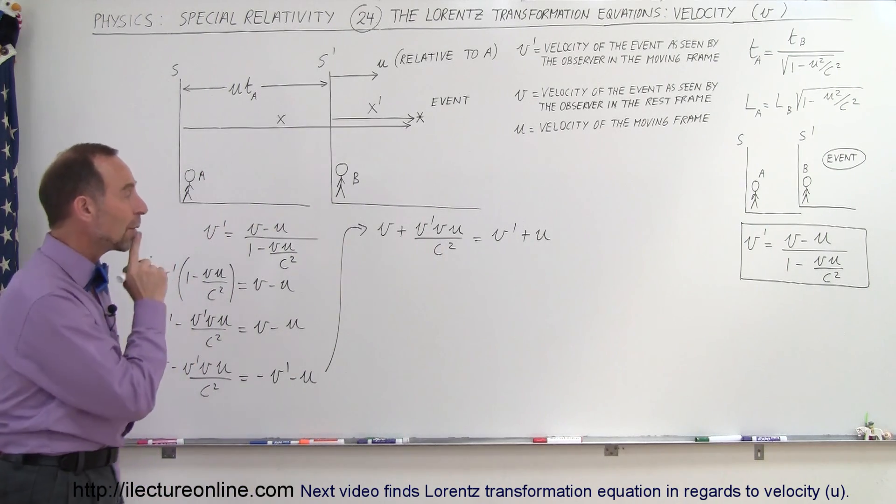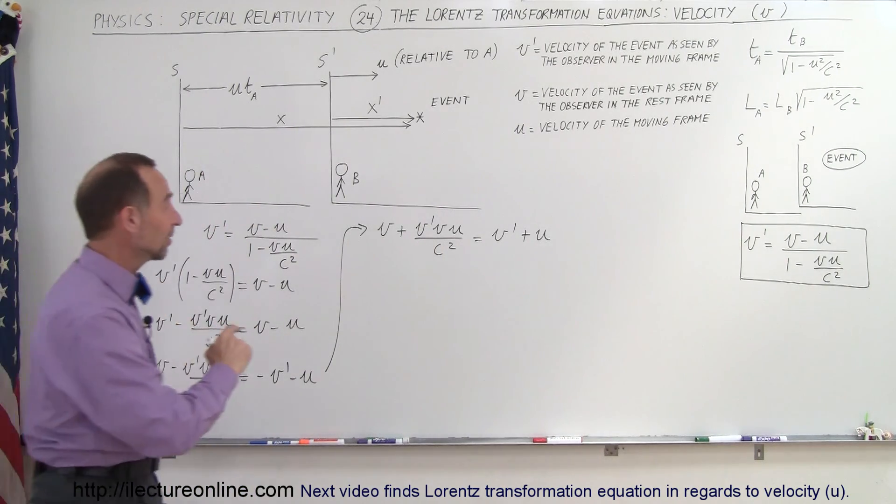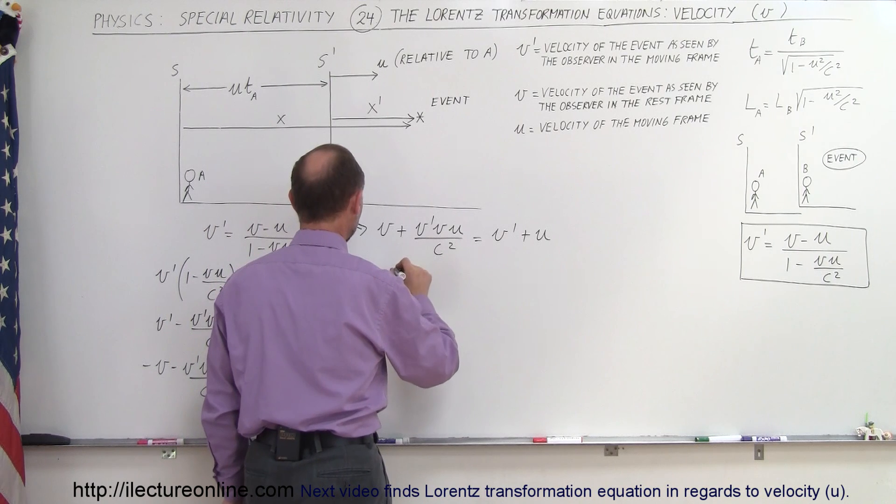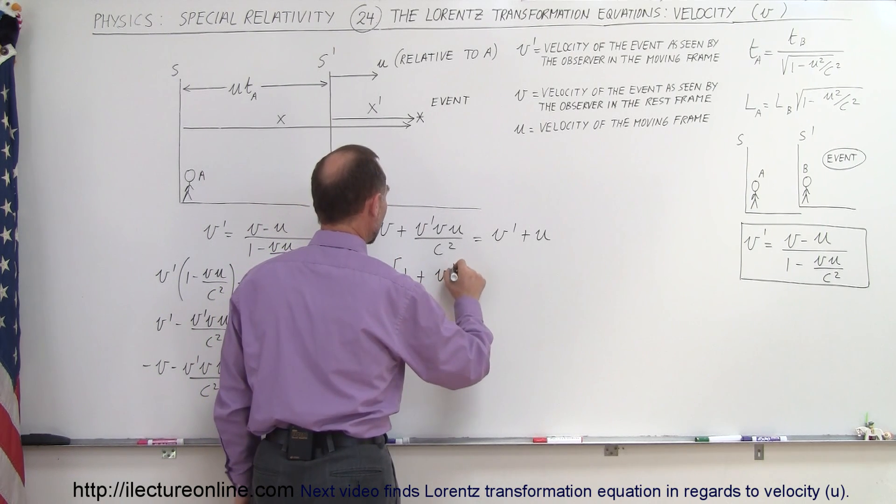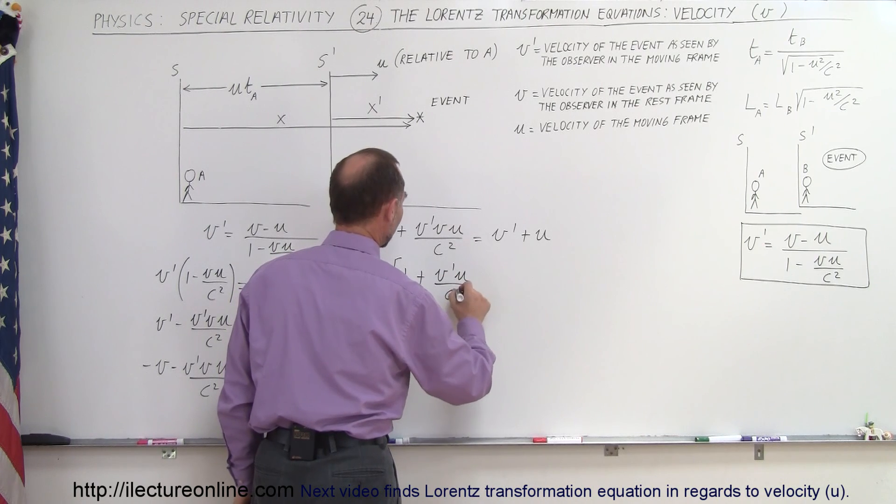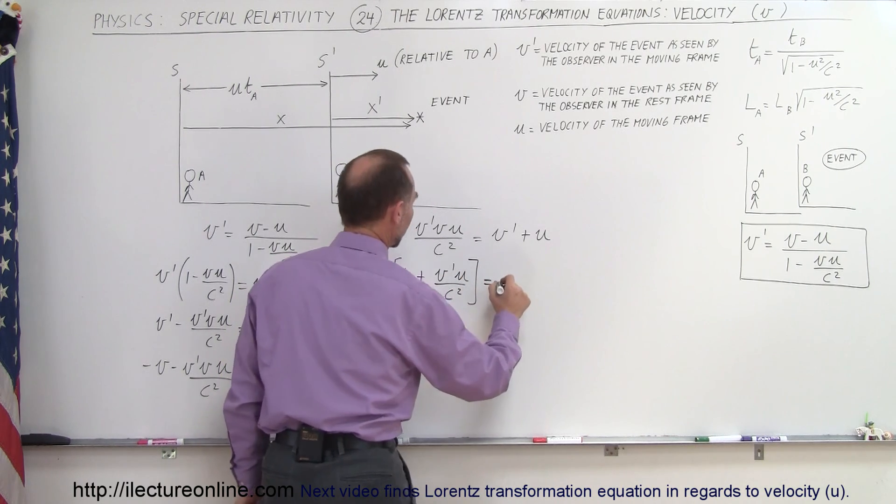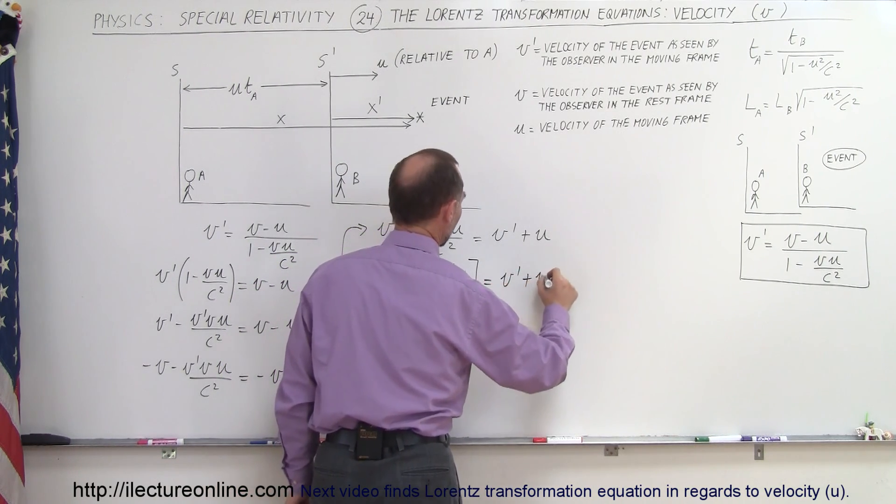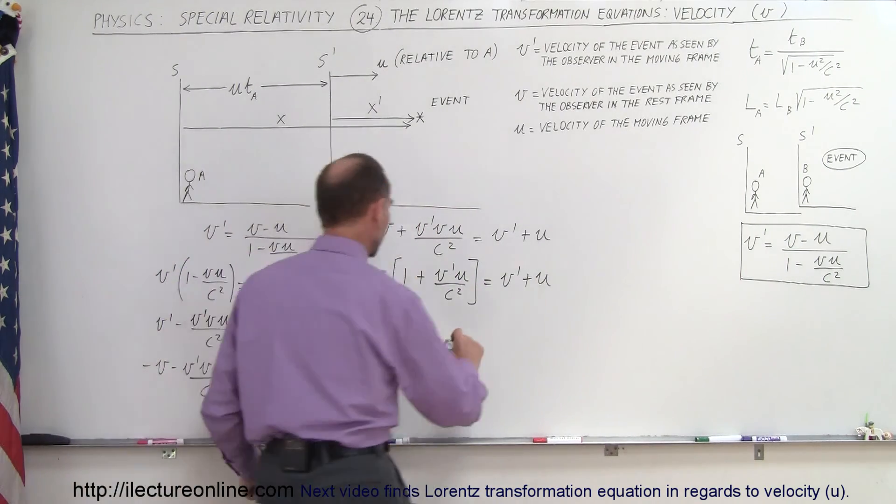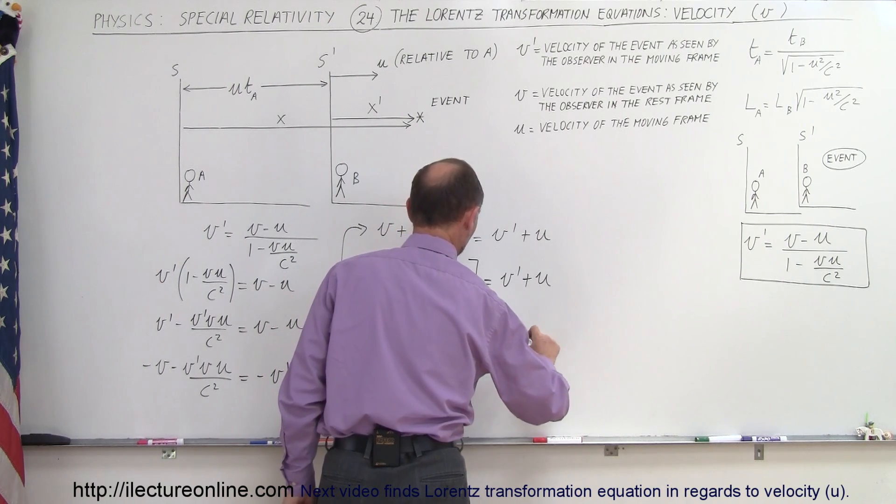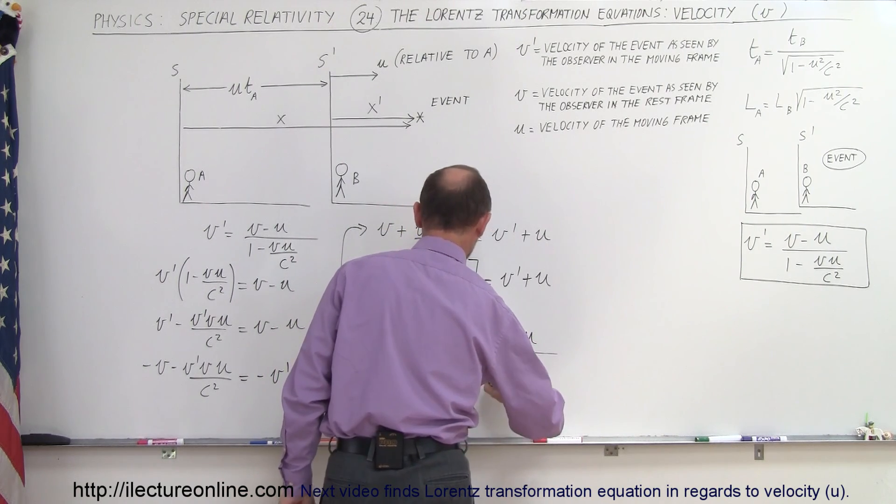Now we want to factor out a V on the left side of the equation, so we have V times the quantity 1 plus, that would become V' U over C squared, is equal to V' plus U. And finally if we divide both sides by what's inside the brackets, we end up with V is equal to V' plus U divided by...